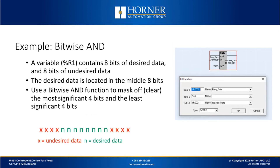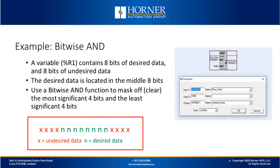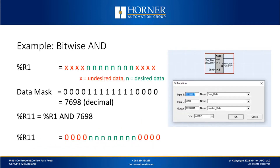Let's look at an example. Let's say we have a variable R1 that contains 8 bits of desired data. As this is a word type variable it contains 16 bits worth of data, and here we want the 8 bits located in the middle. We can use a bitwise AND to get rid of data we don't care about. We create a data mask where the top 4 and lower 4 positions are all 0's, and the middle 8 consecutive positions are 1's. That data mask converts to a decimal value of 7698. When we AND R1 with 7698, our result is the middle data we wanted, with unwanted bits cleared to 0.